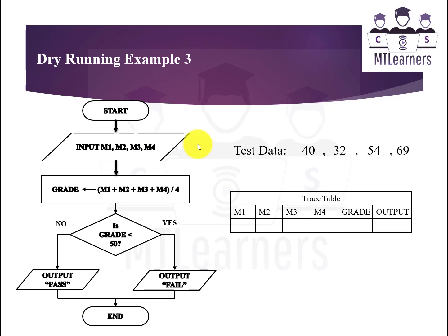Now let's have a look at this example in which the output will lead towards fail. So starting input values 40, 32, 54, and 69, then calculation of grade is 49. 49 is less than 50, so yes, it will move towards output fail. Write output as fail and the program will terminate.